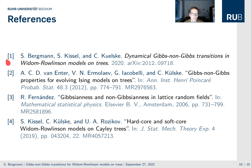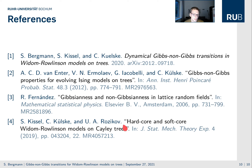Here are the references: the paper itself, a similar paper for the Ising model which we drew inspiration from, a good introduction to the concept of non-Gibbsianness and Gibbs measures in general, and the existing result for the intermediate measure. Thank you for your attention.